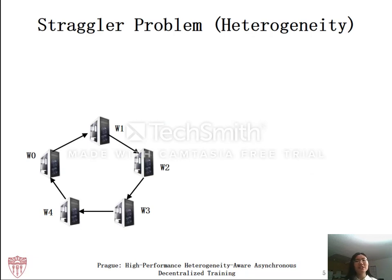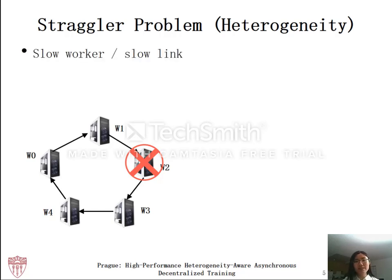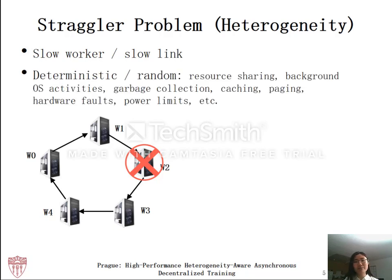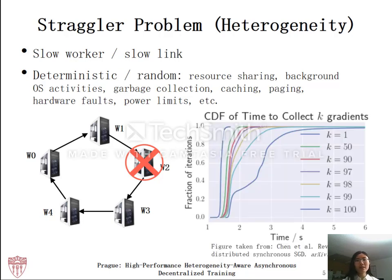One of the main challenges in distributed training is the straggler problem, also called heterogeneity. It happens when some workers are slower than others, either because the worker itself is slow or a network link is slow. Stragglers can be deterministic — for example, a worker machine can have low compute capacity or a network link can have limited bandwidth. They can also be random due to factors like resource sharing, background OS activities, caching, power limits, and so on.